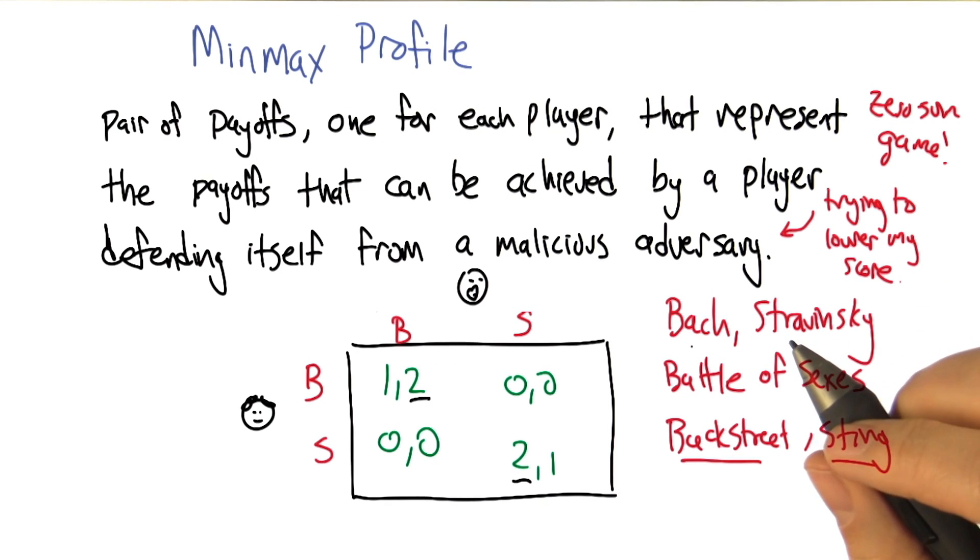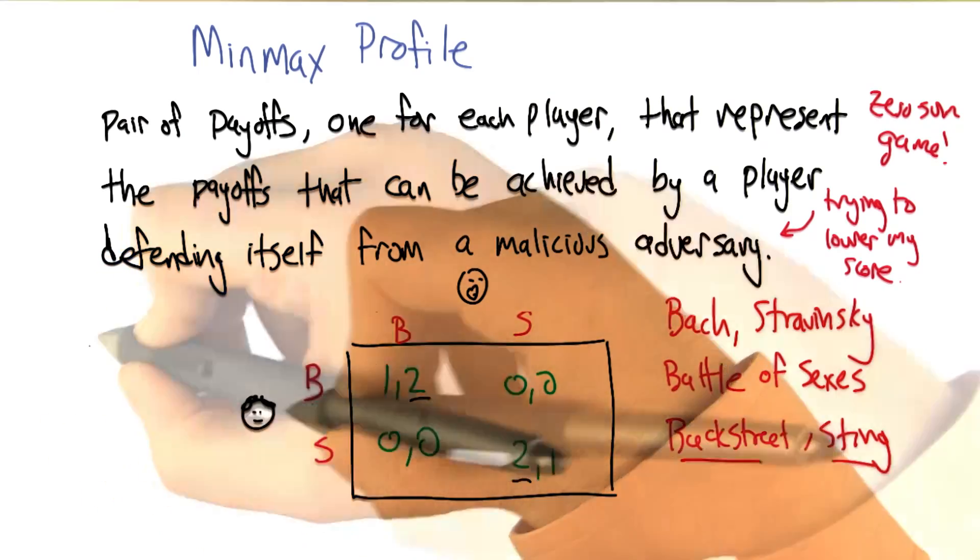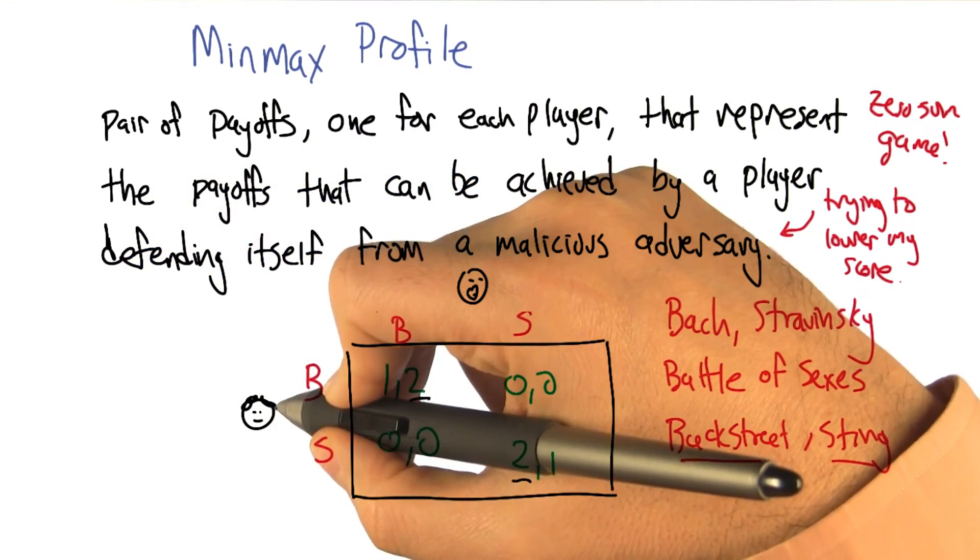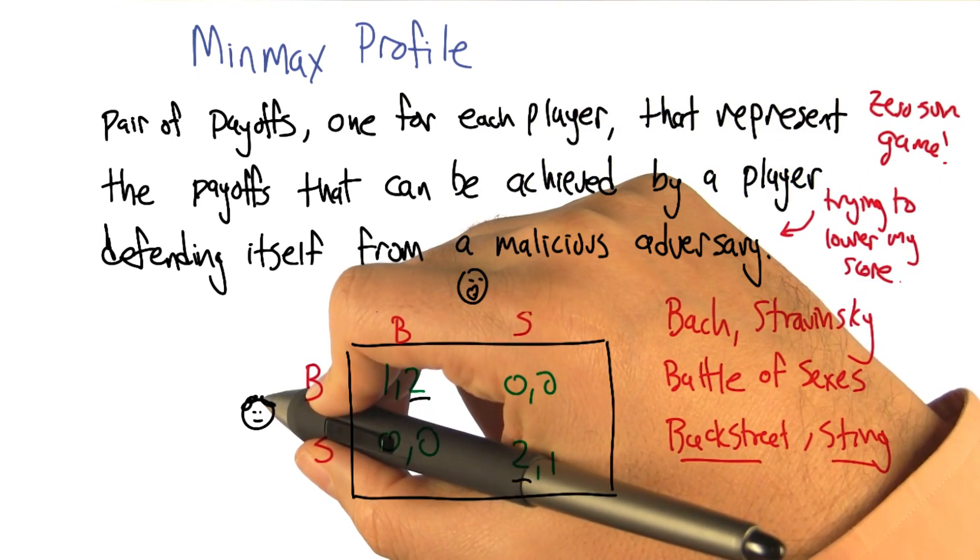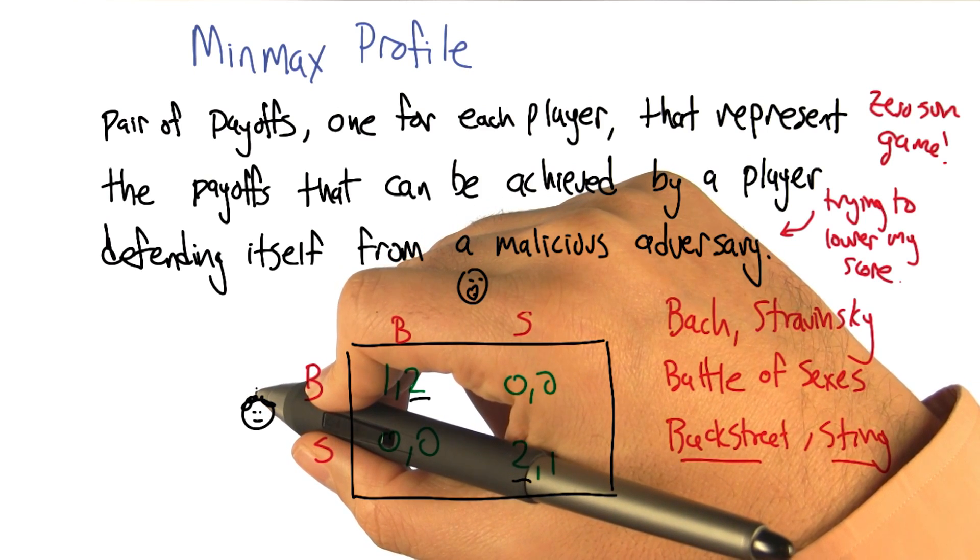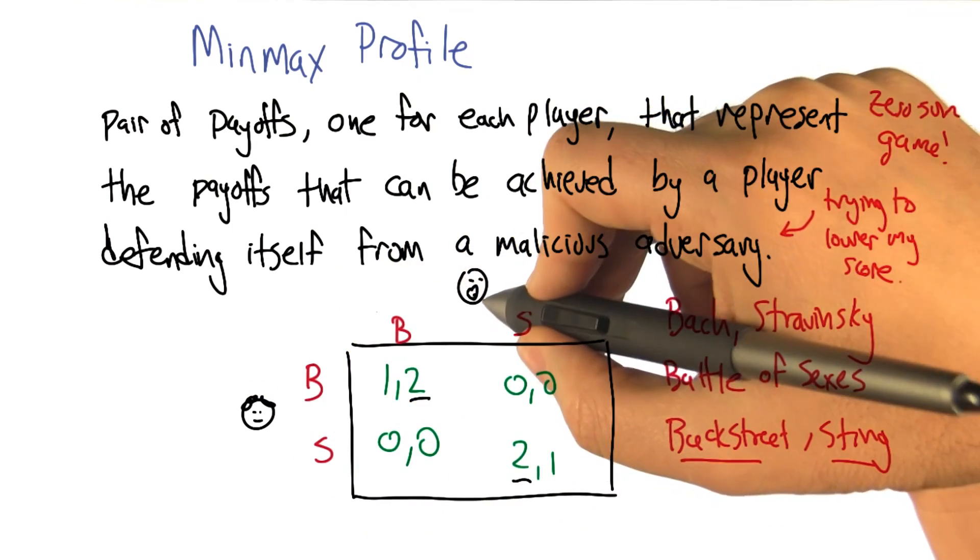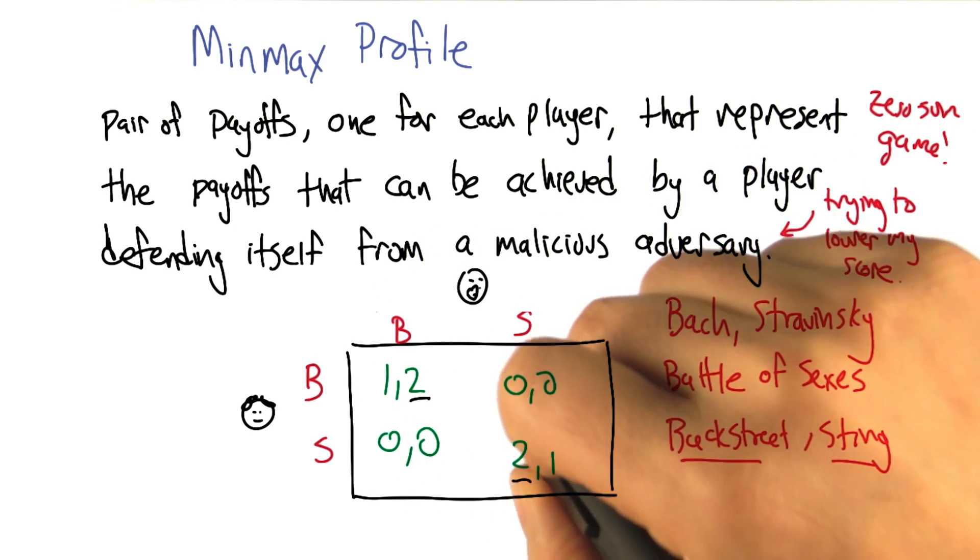So now what we need to figure out is what the min-max profile is for this game. So that's going to be a pair of numbers. One number corresponds to the payoff for Curly and one number corresponds to the payoff for Smoove. And it should be, the payoff for Curly should be the payoff that Curly can guarantee himself even if Smoove is trying to get him to have a low score. And vice versa.